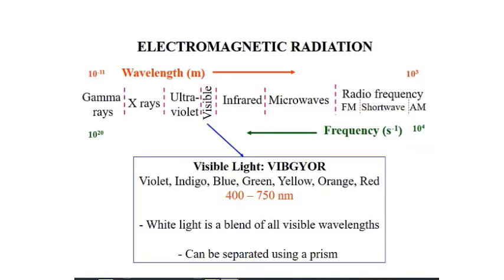We have divided the electromagnetic radiation into different regions, but there is no clear-cut boundary for each region. You cannot say that gamma rays span exactly from this region to this region — that division is just hypothetical.